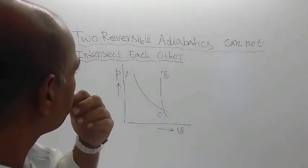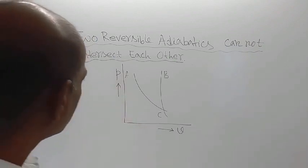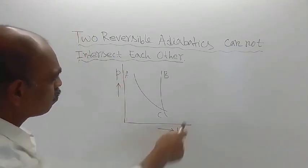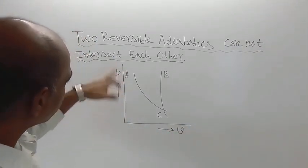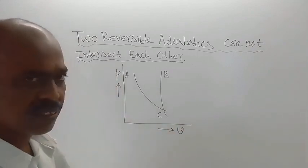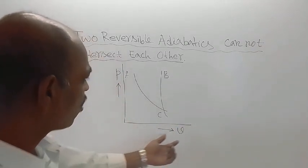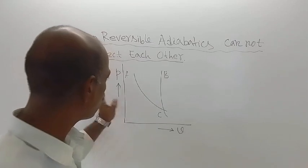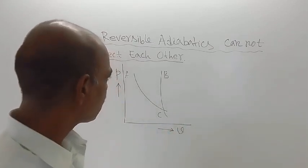What we have done here, you can see we have drawn a PV diagram. The vertical axis is P and the horizontal axis is V. P is pressure, V is volume — small p, small v are taken.